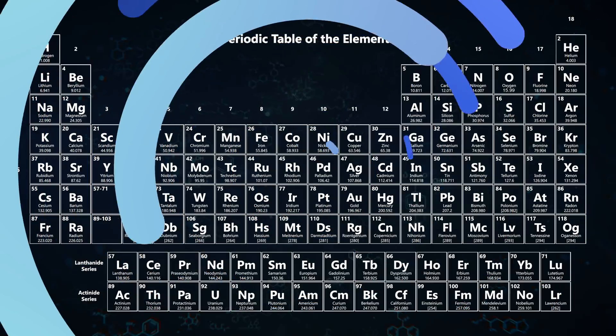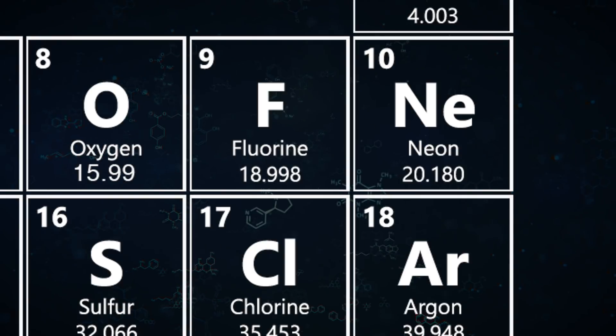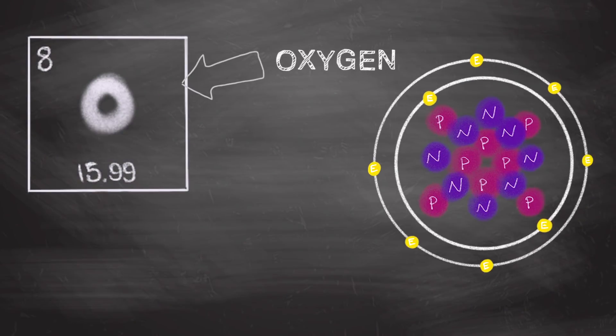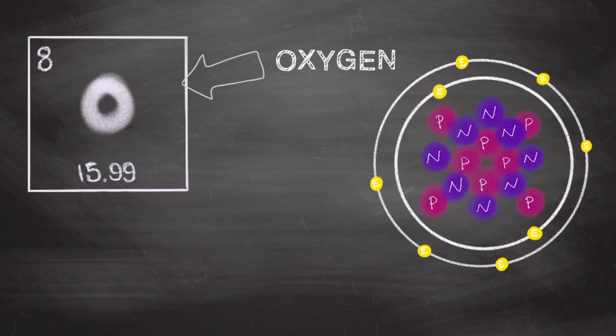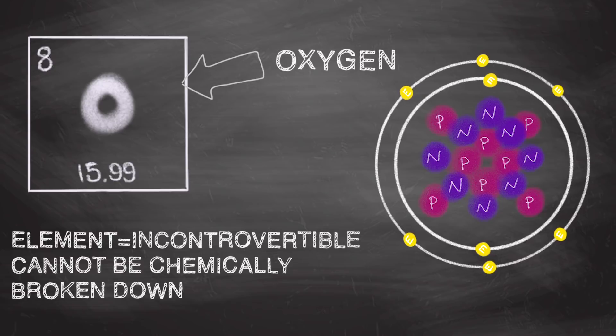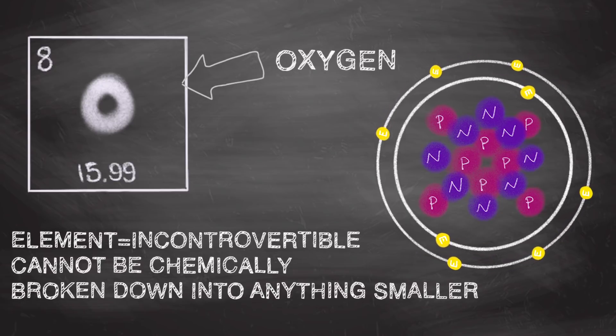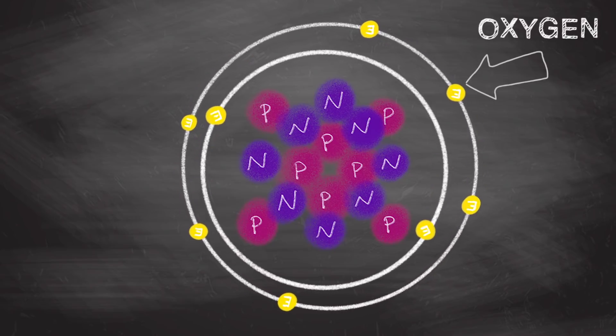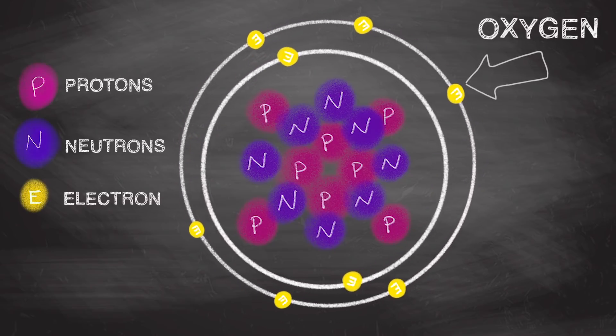Let's start with the very basics and work our way up. Every square represents an element. The smallest unit of an element is an atom of that substance, a substance that is incontrovertible. That means it cannot be chemically broken down into anything smaller. If you try to go smaller, you have to smash apart the atom, and you'll get its subatomic particles: the protons, neutrons, and electrons.